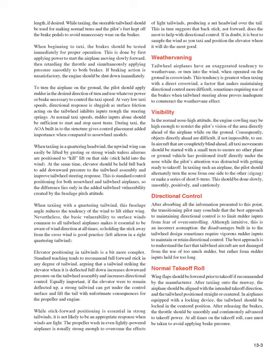In the normal nose-high attitude, the engine cowling may restrict the pilot's forward vision while on the ground. In aircraft that are completely blind ahead, all taxi movements should be started with a small turn to ensure no plane or ground vehicle has positioned itself directly under the nose. While taxiing such an airplane, the pilot should alternately turn the nose from side to side — zigzag — or make a series of short S-turns, done slowly, smoothly, positively, and cautiously.